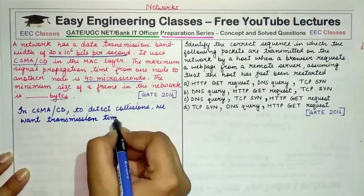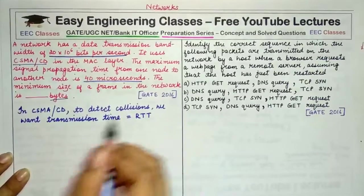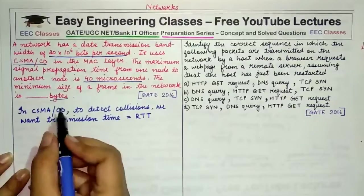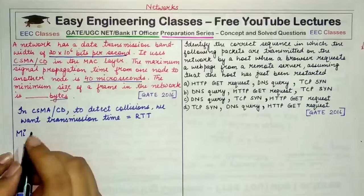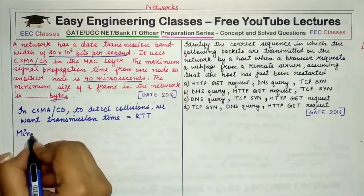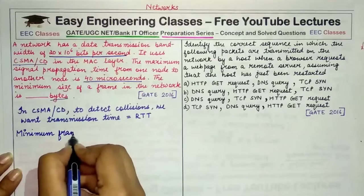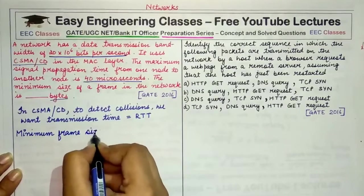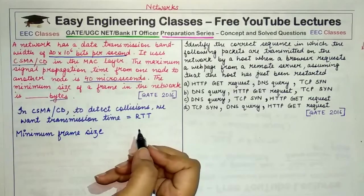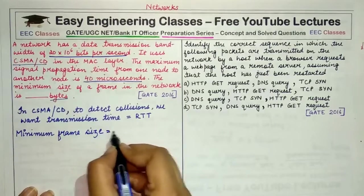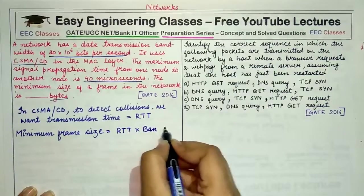To detect collisions, we want that transmission time be equal to the round trip time, that I am writing as RTT. Now the minimum size of the frame that we need to find out would be given by a product of the bandwidth and the round trip time.